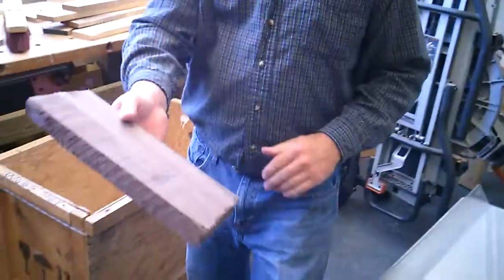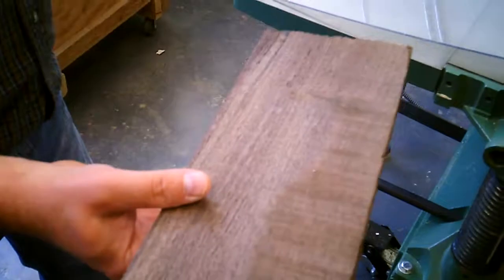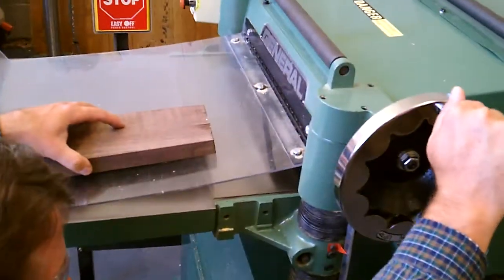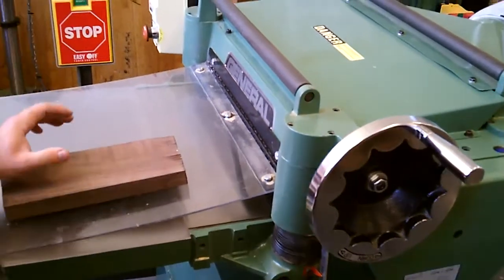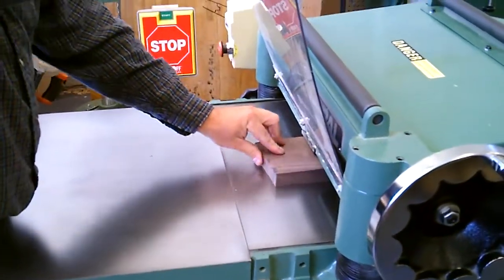And it cleans up the other side of the board. Now it all depends on what thickness that you need. It's called the thickness planer for a reason. So if we wanted it to be exactly one inch, we bring it to the number and feed it in.